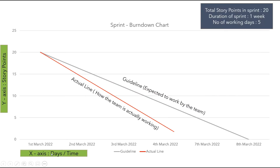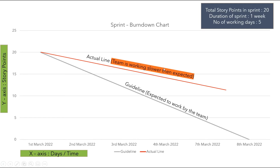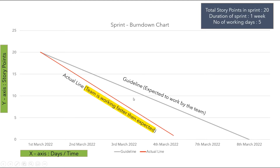The y-axis represents story points and the x-axis represents days or time. The sprint starts on 1st March 2022 and ends on 8th March 2022. 5th and 6th March are not shown as they are non-working days. The burndown chart has two lines: the guideline, shown in gray, which represents how the team is expected to work, and the action line, shown in red, which represents how the team is actually working. If the action line is above the guideline, the team is working slower than expected; if below, the team is working faster.